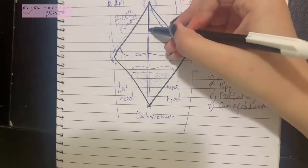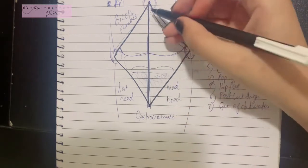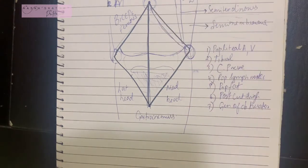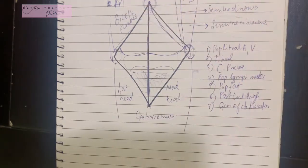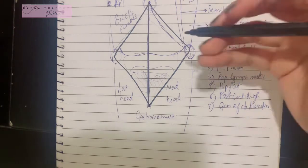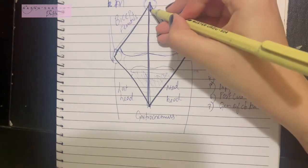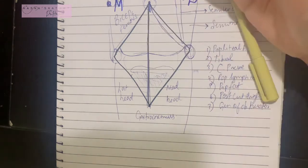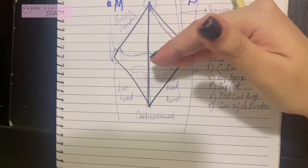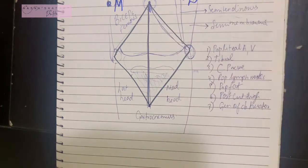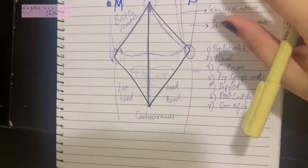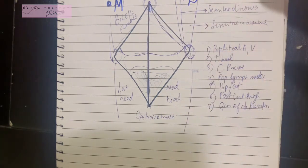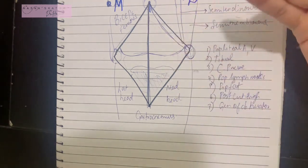The order of arrangement of these structures is the most important thing to know. The most superficial — most posterior — structure is the tibial nerve. Coming deep to the tibial nerve is the popliteal vein. And deep to that is the popliteal artery, which is the deepest structure in the popliteal fossa. This is the order in terms of what is posterior versus anterior, or more superficial versus deep.